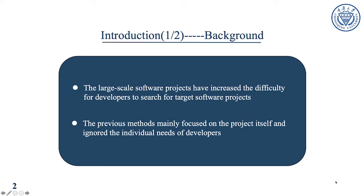There are many software projects, and it is necessary to recommend projects to developers. As we all know, GitHub is a hosting platform for open-source software projects where developers can share their projects with others. However, as the number of software projects increases, it becomes difficult for developers to find software projects that meet their needs or interests. Previous studies mainly focused on content-based recommendation methods, mostly considering the project itself, such as the similarity and popularity of projects, while ignoring the personalized needs of users.